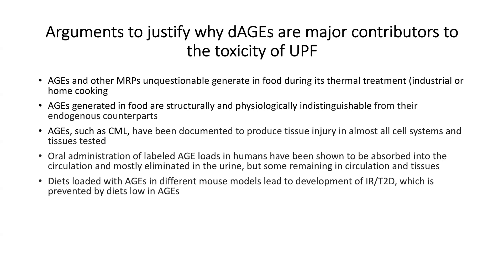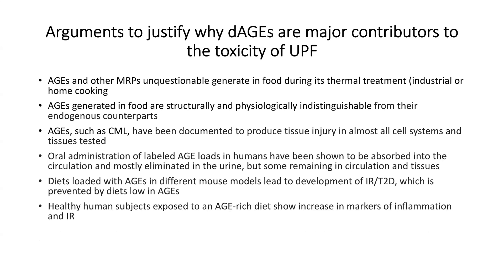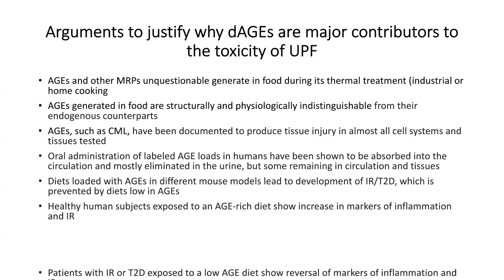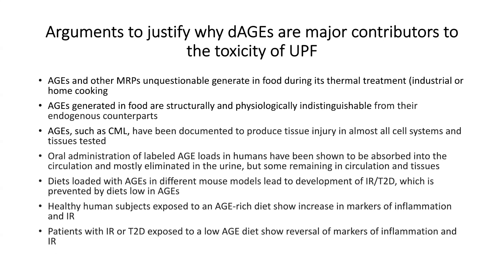Diets loaded with AGEs in different mouse models lead to development of insulin resistance, prevented by a diet low in AGEs. Healthy human subjects exposed to an AGE-rich diet show increasing markers of inflammation and insulin resistance. Patients with insulin resistance or type 2 diabetes exposed to a low-AGE diet show reversal of markers of inflammation and insulin resistance. So these are a lot of arguments.